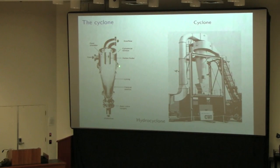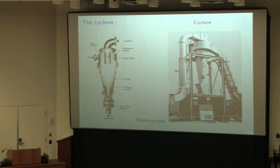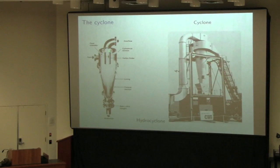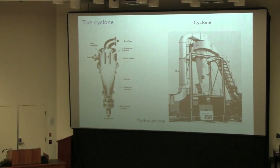We have a cylindrical section and then a conical section that tapers down to the underflow exit. That underflow exit is given several names — one you may see, especially in British literature, is the spigot. The overflow is captured through what's called the vortex finder. That vortex finder captures the inner vortex and uses it to pull material out into the overflow stream.